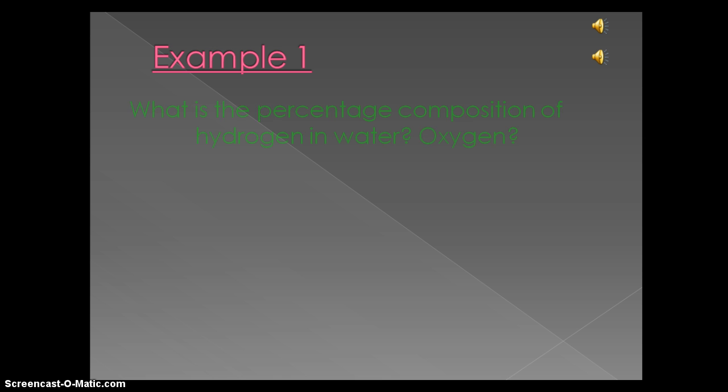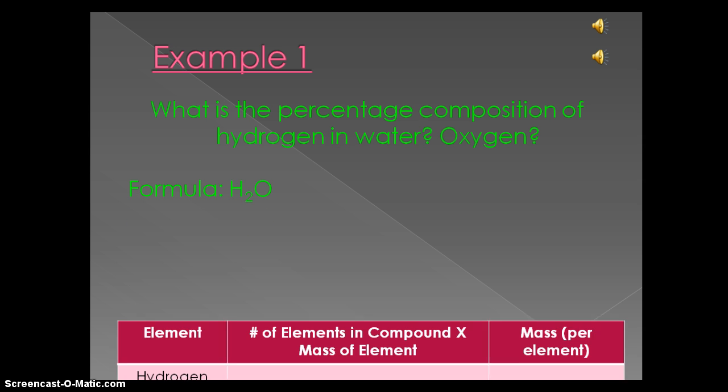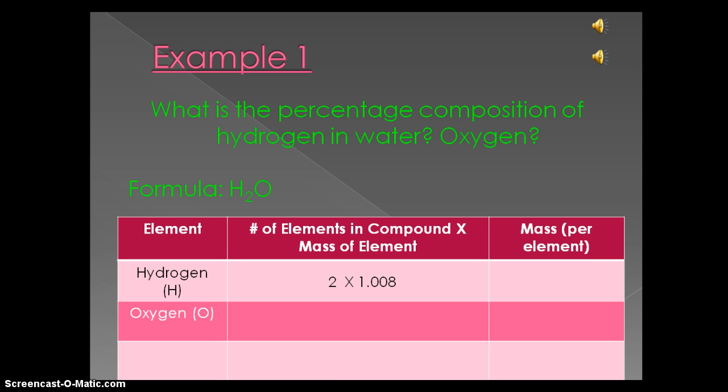Example 1. What is the percent composition of hydrogen in water? The first step is to calculate the molecular mass of our compound H2O. If you do not remember how to do that, please go back to calculating the molecular mass.